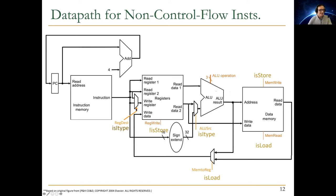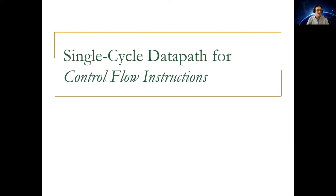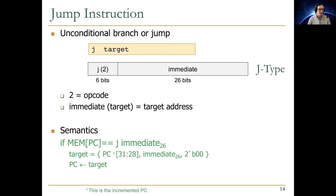Now it's time for control flow instructions. Before constructing the full data path, we need data path and control logic for control flow. We discussed R-type, I-type, load word, and store word. Now it's time for control flow instructions. We'll start with the jump instruction in MIPS — an unconditional branch. The bottom 26 bits of the instruction are interpreted as an immediate value.